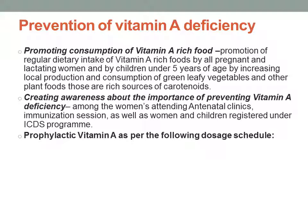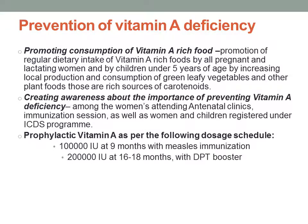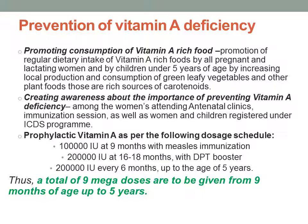Creating awareness about preventing vitamin A deficiency is important — among women attending antenatal clinics, immunization sessions, and women and children registered under the ICDS program. Prophylactic vitamin A is given as per the government schedule: 1 lakh international units at 9 months along with measles immunization, then 2 lakh international units at 16–18 months along with the DPT booster dose, and thereafter 2 lakh international units every 6 months up to the age of 5 years.